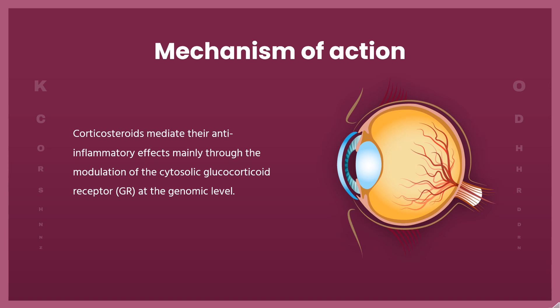They also reduce synthesis of histamine, stabilize cell membranes, and inhibit degranulation of mast cells. Recent work suggests that the activated corticosteroid-GR complex also elicits non-genomic effects, particularly the inhibition of vasodilation, vascular permeability, and migration of leukocytes.